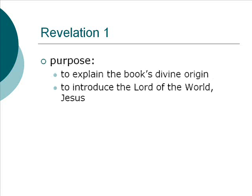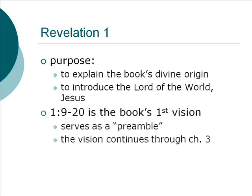The purpose of chapter 1 is to explain the book's divine origin and to introduce to us the Lord of the world, Jesus. We have a few of the regular kinds of things you would find in a first-century letter — the sender, the recipients, those kinds of things. Then starting in verse 9 going to the end of the chapter, we have the book's first vision, where John says he saw something. This serves as the preamble, the warm-up to the messages in chapters 2 and 3, but even to the greater picture we'll see in chapters 4 and 5 of the throne of God.